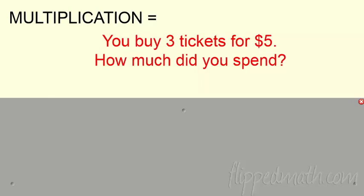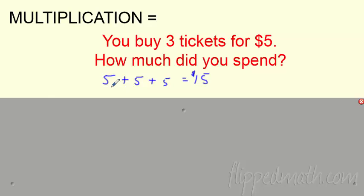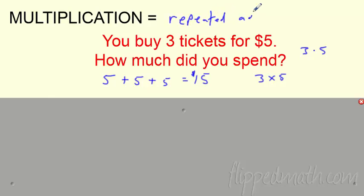Let's talk about multiplication. I know you guys know how to multiply, but what does it really mean to multiply? Check out the situation: you buy three tickets for $5 — how much did you spend? Well, $5 plus $5 plus $5, easy peasy, you spent $15. But is there a faster way? Like what if I bought 27 tickets? I'm going to write 3 times 5. Multiplication is just repeated addition. That's all it is.